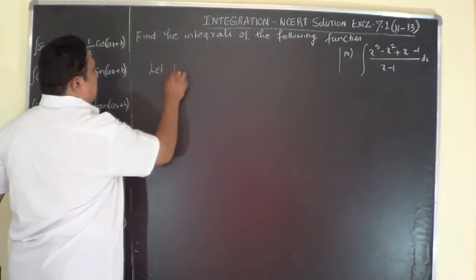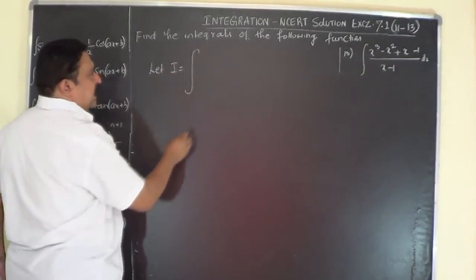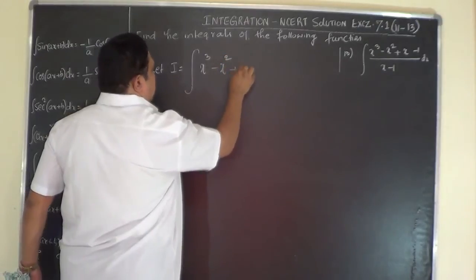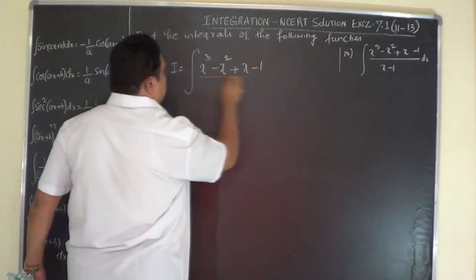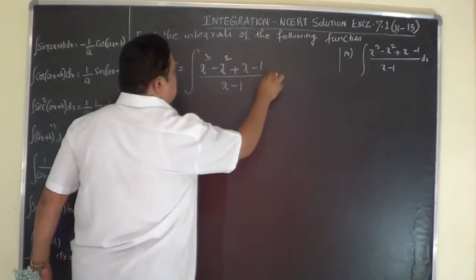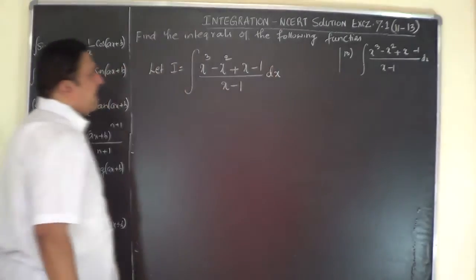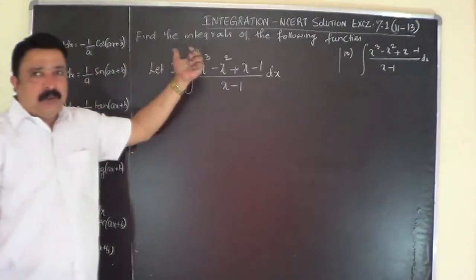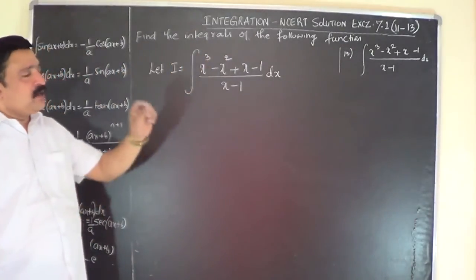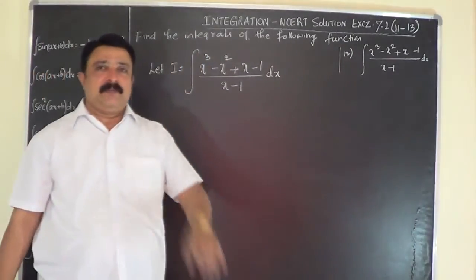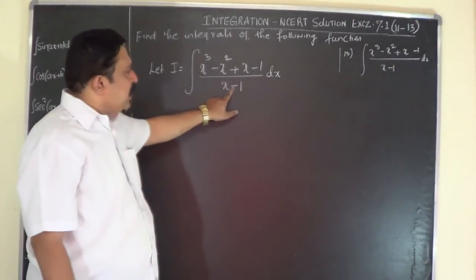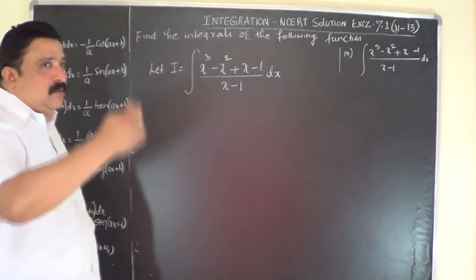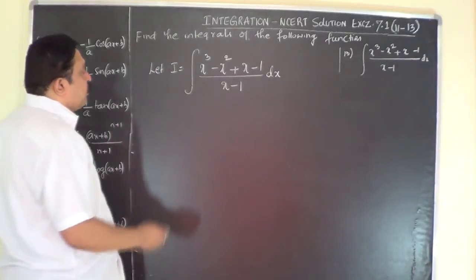For example 13: Let I equal the integral of (x³ - x² + x - 1) divided by (x - 1) dx. If you observe the previous two problems, the denominator was a monomial — only x was present. Here the denominator is a binomial, x minus 1. So splitting and direct division is not possible.